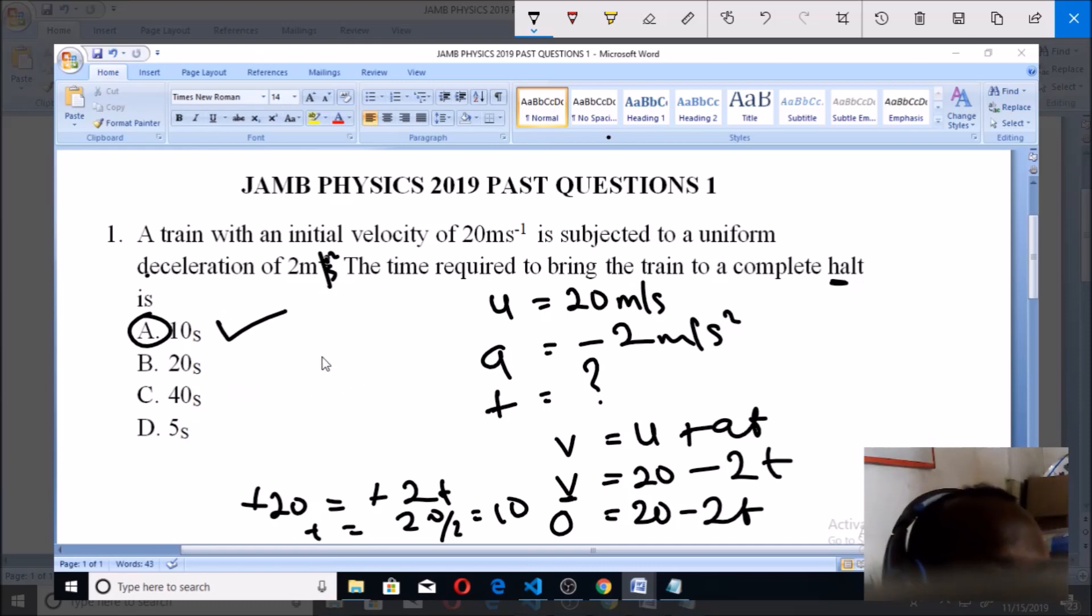You need to know the equations of motion. The one applicable here is v equals u plus at. Whenever you're told the car was brought to a halt or that the moving object stopped moving, then v equals zero. The initial velocity is given as 20. Instead of having plus, because we are having deceleration, it will now be minus. The acceleration is 2, then make t the subject. You can take this minus 2t over to this side so it will be plus 2t equals 20. So t equals 20 over 2, which equals 10. That makes 10 the right answer.